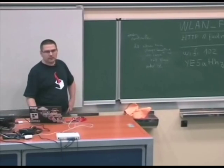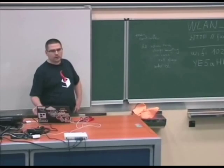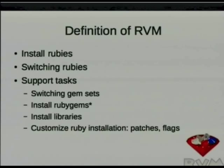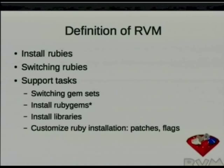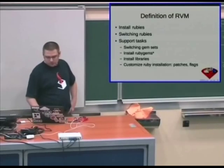The second functionality is switching Rubies. If you already have Ruby installed, you want to use it, but you have a lot of projects, so you want to change the environment to match only — to include all the libraries and gems you use. There are also a lot of support tasks: you can change gem sets, install Ruby gems, install libraries, customize Ruby installation with patches and flags. These are the most used functions.